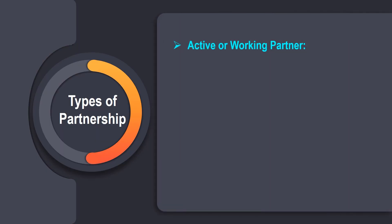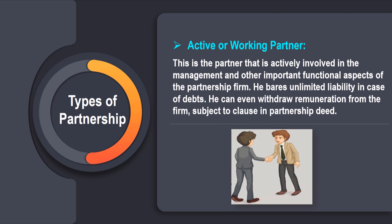Now let us talk of the different types of partners. The first is the active or working partner — a partner actively involved in the management and other important functional aspects of the partnership firm. He bears unlimited liability in case of debts and can even withdraw remuneration from the firm, subject to a clause in the partnership deed.